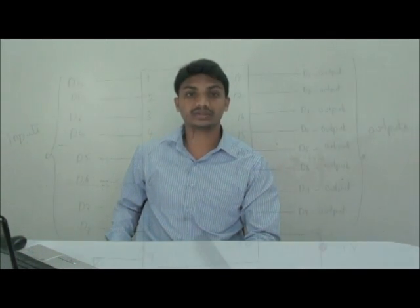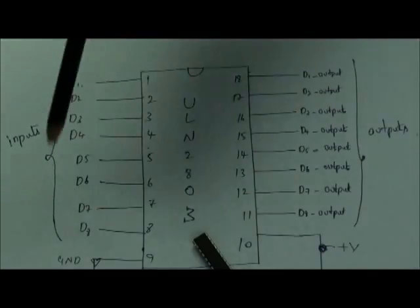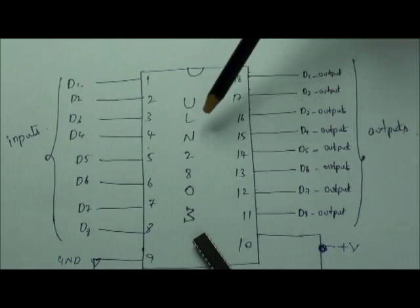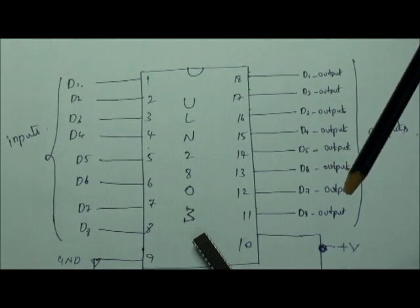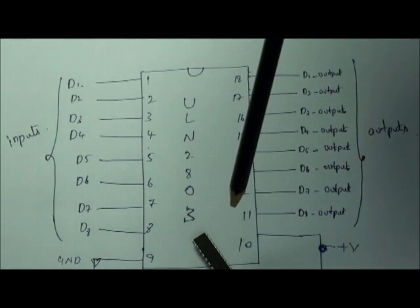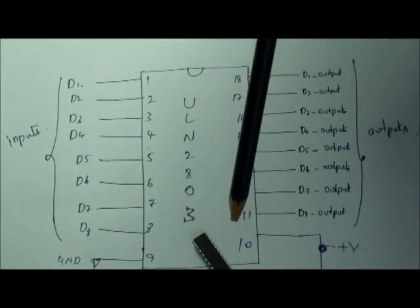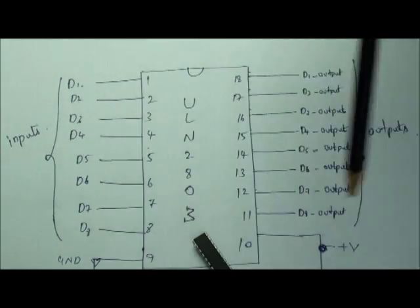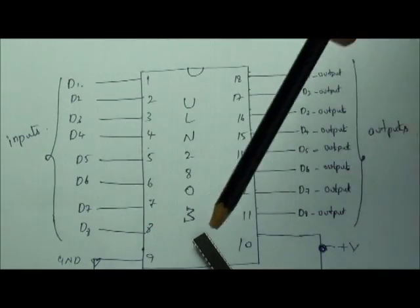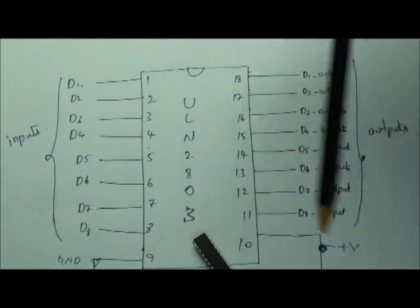This ULN2803 outputs 50V and 500mA of current. Let's look at its pin configurations. This is a rough sketch which explains the pin configurations of the ULN2803. Usually these ICs are made up of Darlington connected transistors with some snubbing or protection diodes. This normally comes in 18 pin DIP packages and is also available in SMT packages.